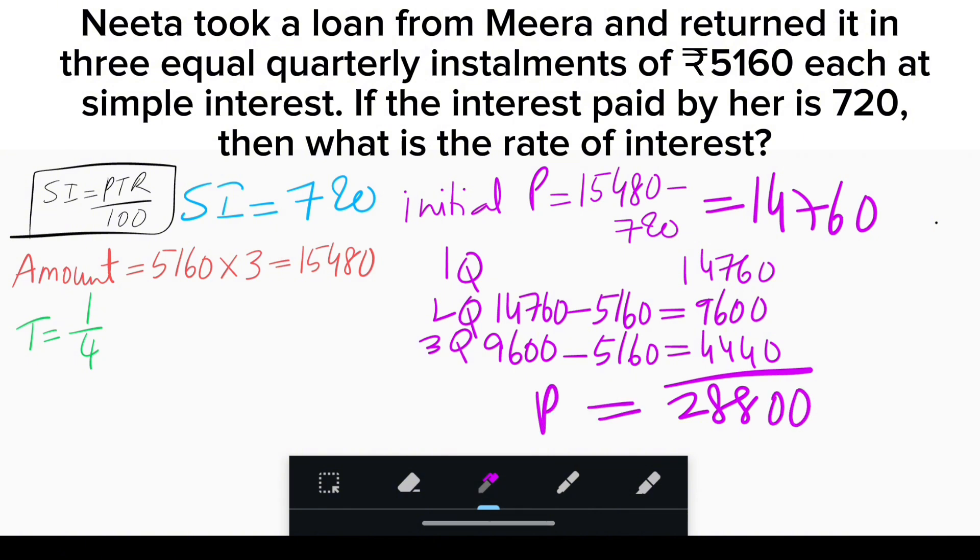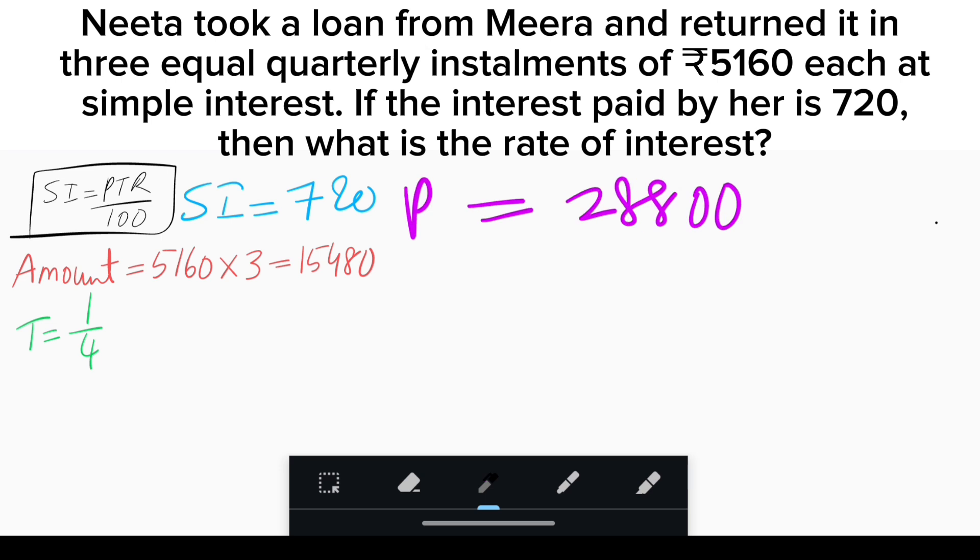Substitute in the simple interest formula: 720 = (28,800 × 1/4 × R) / 100.